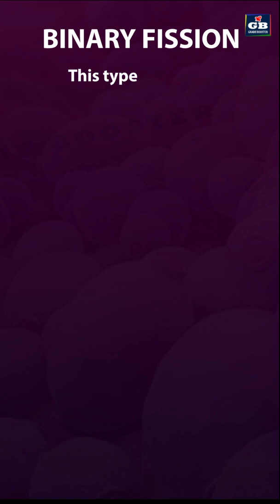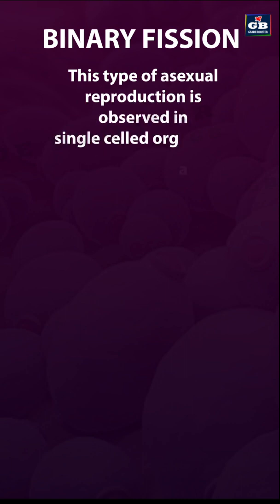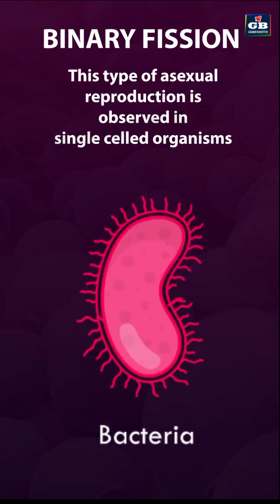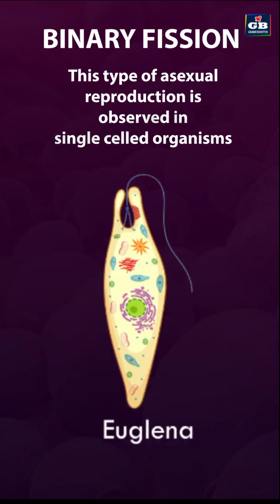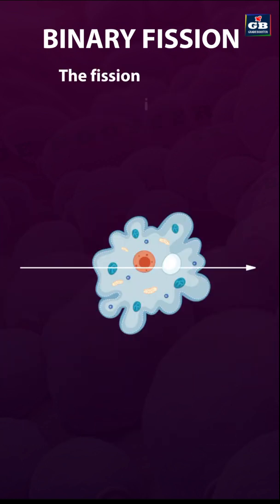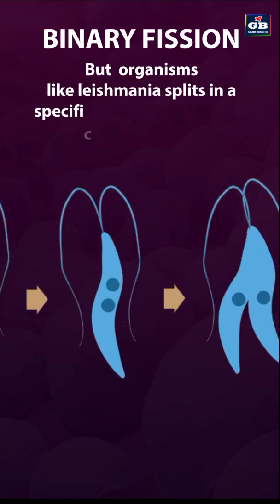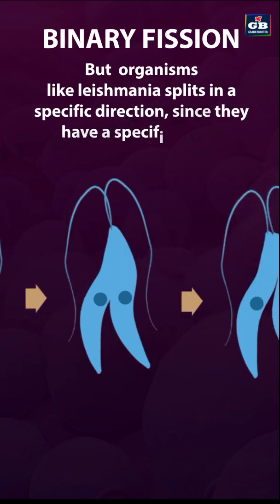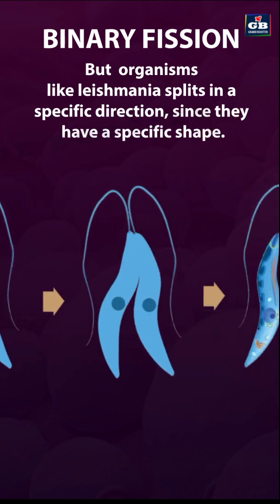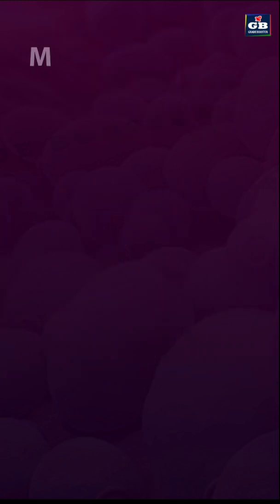This type of asexual reproduction is observed in single-celled organisms like amoeba, bacteria and euglena. The fission in amoeba can take place in any plane because it has no specific shape. Whereas leishmania splits in a specific direction since it has a specific shape.